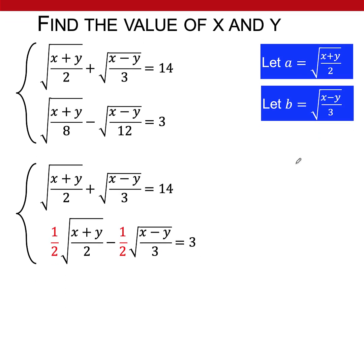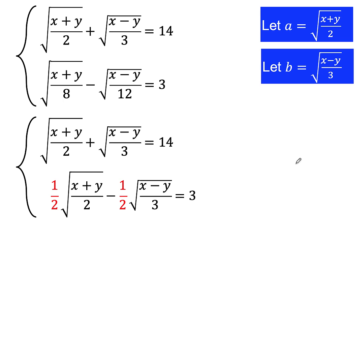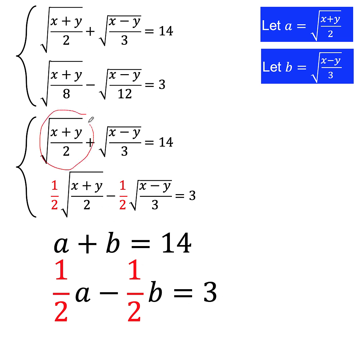And from this substitution, we can now rewrite the given equation as a plus b equals 14. And 1 half a minus 1 half b equals 3. What we did is, we substitute the square root of x plus y over 2 by a. So, this one is also substituted by a. The square root of x minus y over 3 is our b. So, we now have this b. And this one is also replaced by b. All the rest are just copied.